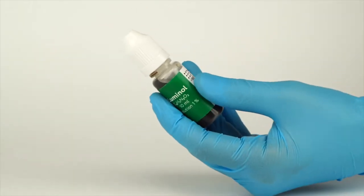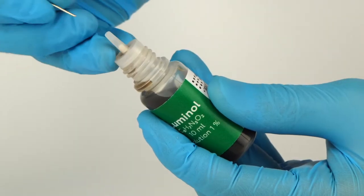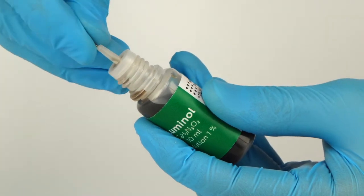To open a bottle containing a reagent, push the cap down and turn it. Carefully pierce the bottle nozzle using an unbent paper clip.